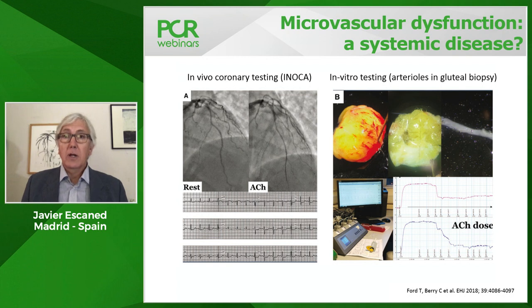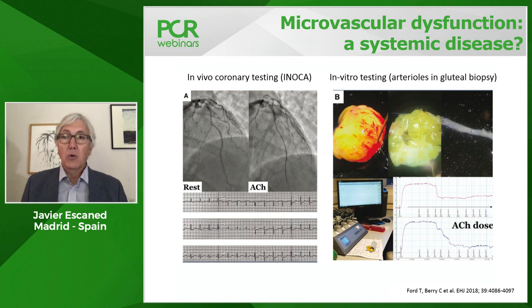Colin and his group in Glasgow did very interesting research looking at patients who have INOCA and examining how arterioles in other parts of the body were reacting to acetylcholine. They found that the same abnormalities in endothelial function found in the epicardial vessels could be demonstrated also in arterioles obtained in gluteal biopsy. This opens the possibility that in some patients, microvascular dysfunction is a systemic disease.